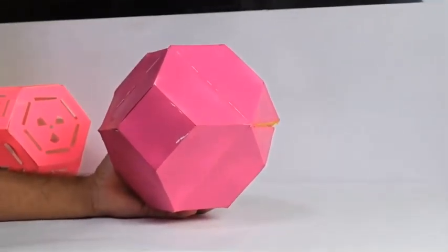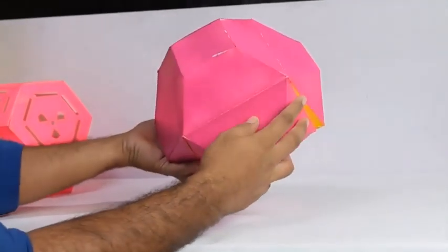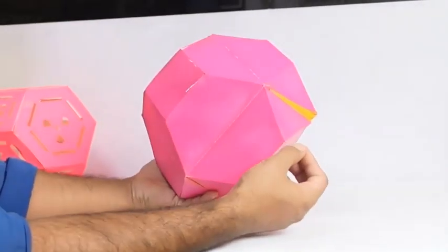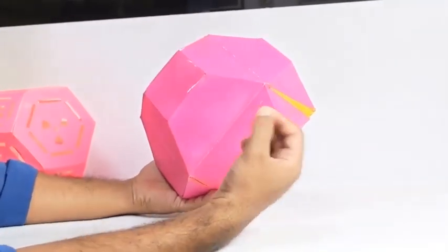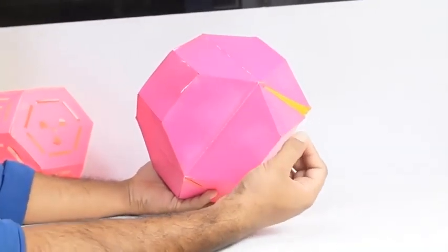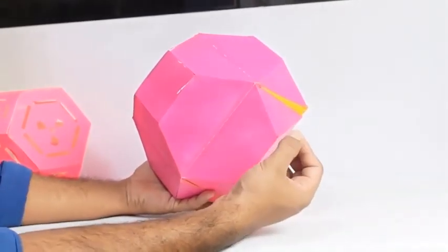Now, if I cut this truncated octahedron, you can see here in such a way that one more interesting shape can be made, that is a cube. Let me show you that.